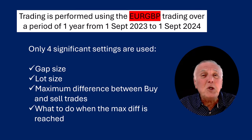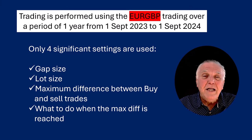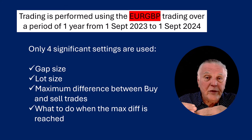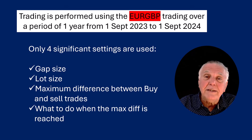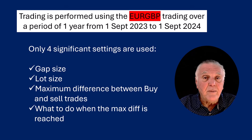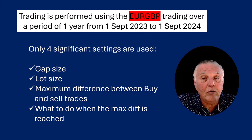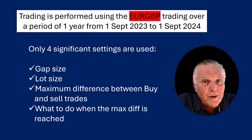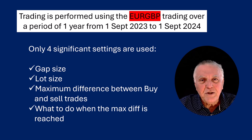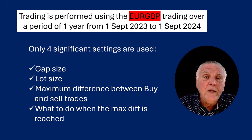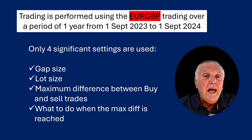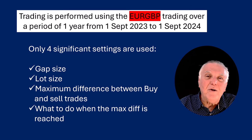We're going to be looking at only four significant settings — most probably only two, since one setting had no impact on the trading. The first is the gap size: the difference between one grid level and the next, normally measured in pips. Then there's lot sizing — the size of the transactions. There's also a maximum difference between buys and sells, a protective setting that triggers certain actions if buys start outrunning sells.